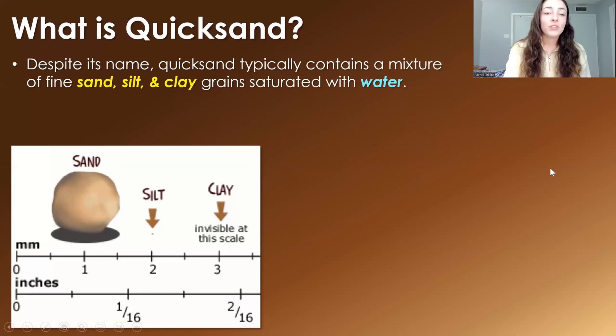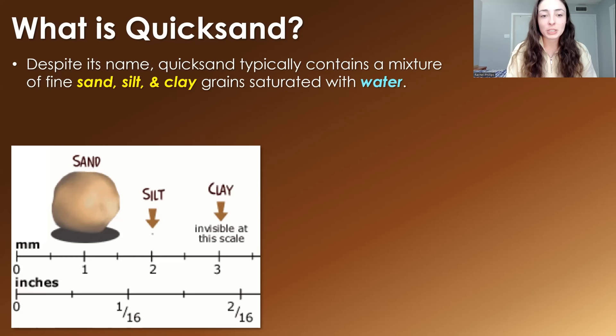First off, what is quicksand? Despite its name, quicksand typically contains a mixture of not only fine sand grains, but also silt and clay, and of course it's saturated with water, which is what makes it so quicksandy. Sand, silt, and clay are just different sizes of sediment grains. Sand is the largest, then silt, then clay is invisible to the naked eye — very, very tiny. A mixture of all of these grain sizes, when saturated with water, makes quicksand.